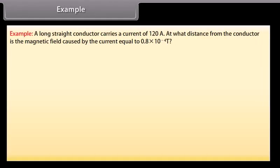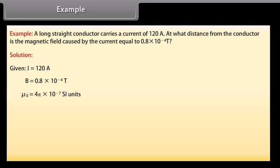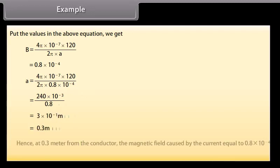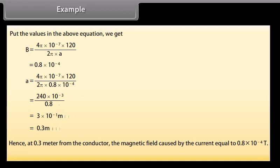Example: A long straight conductor carries a current of 120 ampere. At what distance from the conductor is the magnetic field equal to 0.8 × 10^(-4) Tesla? Given: I = 120 A, B = 0.8 × 10^(-4) T, mu_0 = 4 pi × 10^(-7) SI units. Using B = mu_0 I / 2 pi R, putting in the values gives R = 0.3 metres. Hence, at 0.3 metres from the conductor, the magnetic field equals 0.8 × 10^(-4) Tesla.